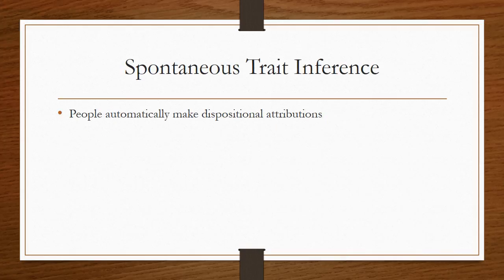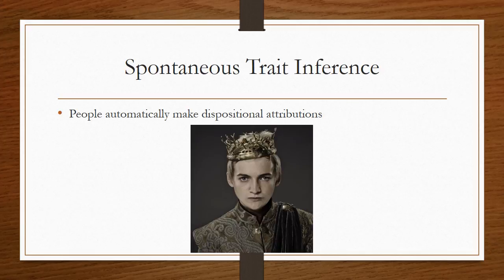Spontaneous trait inference is essentially that people will automatically make dispositional attributions for others' behavior. So if I show you a picture of this guy — he's an actor who plays a really spoiled brat of a king on Game of Thrones — you'll probably think some negative things about him because the character is very, very negative.